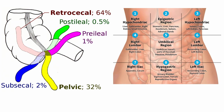This is the schematic showing the variation of locations of the appendix. We can see the most common is retrocecal, up to 64%; post-ileal around 0.5%; pre-ileal around 1%; pelvic form around 32%; subcecal around 2%.